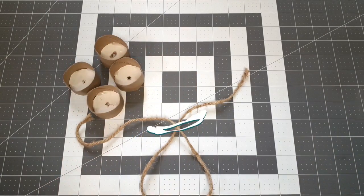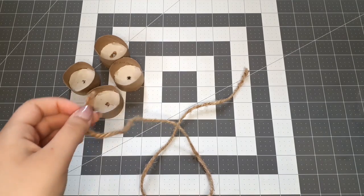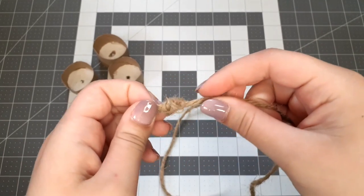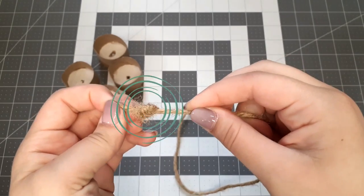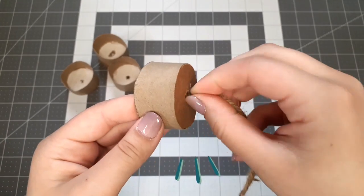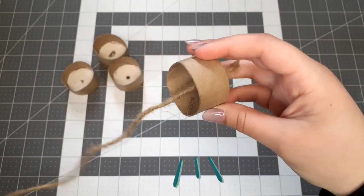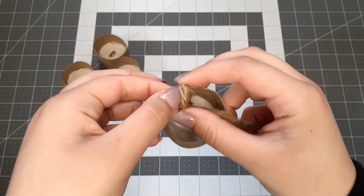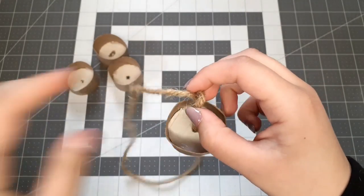Now take a length of twine, mine is around 30 inches long, and make a double knot in one end. Then thread one of the cardboard cups you made onto the string. We want the opening to be facing up, by the way. Make another knot a couple inches up the string, and then repeat with the remainder of the cardboard cups.